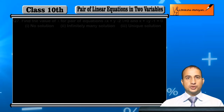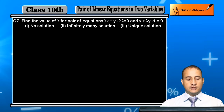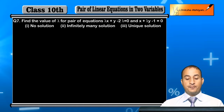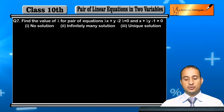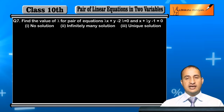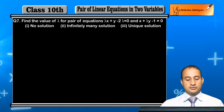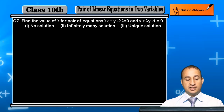Now students, see Question 7: Find the value of lambda for the pair of equations — lambda x plus y minus 2 lambda equals 0, and x plus lambda y minus 1 equals 0 — for, first, no solution; second, infinitely many solutions; and third, unique solution.